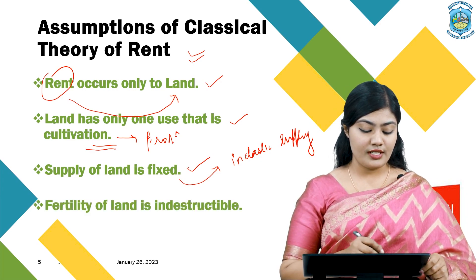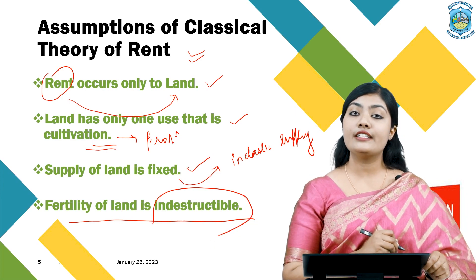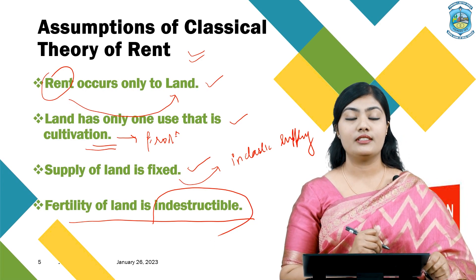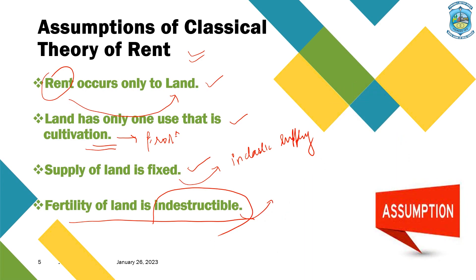The next assumption is that the fertility of land is indestructible. Mr. David Ricardo said that since land is a free gift of nature, it has some of its own power — that is, the power to produce more and more and to increase fertility.